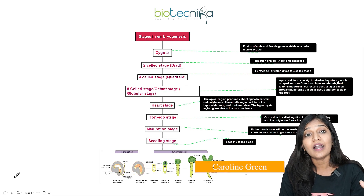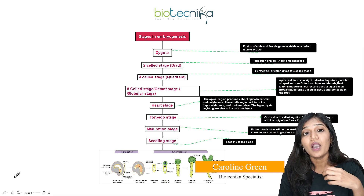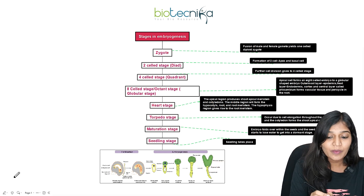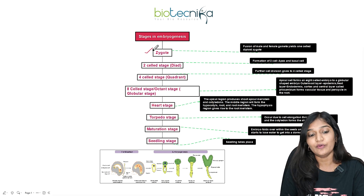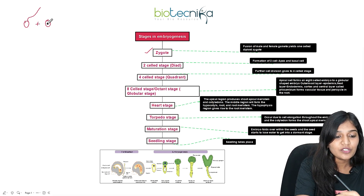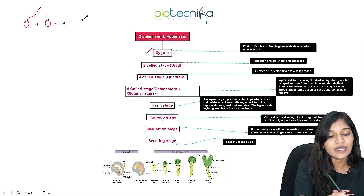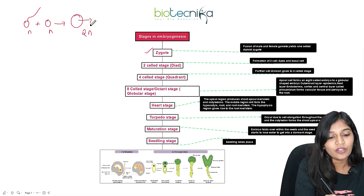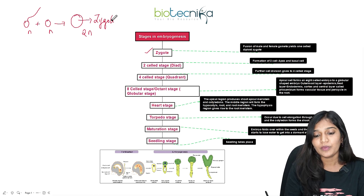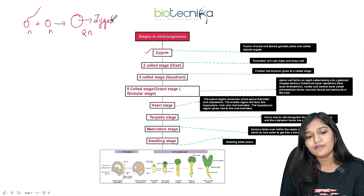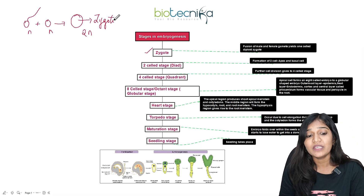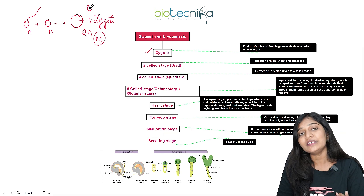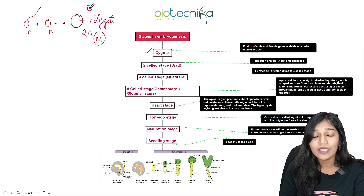First let's understand how an embryo is actually formed, and then how the root, shoot, and all other parts are formed. We already know a one-cell stage called a zygote. When a sperm and an egg fuse together, it forms a zygote — this is haploid in nature, which forms 2N. In angiosperms, the zygote is present specifically towards the micropyle region as well as the chalaza region — chalaza above and micropyle below.